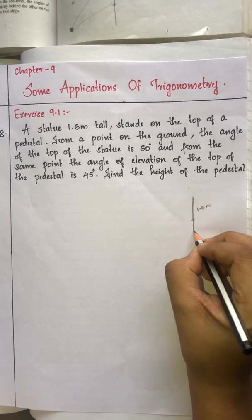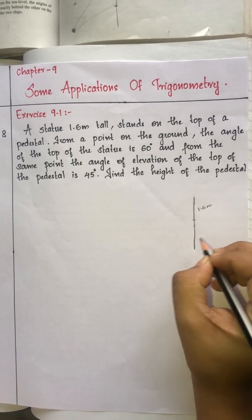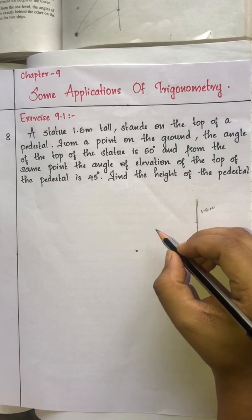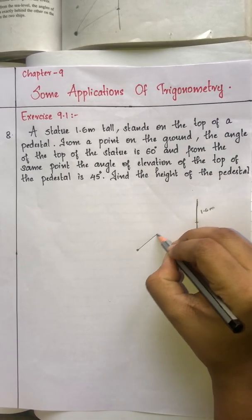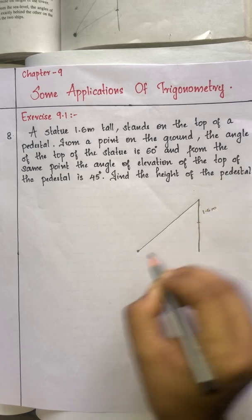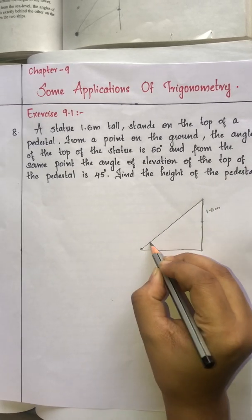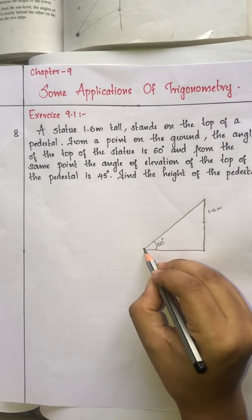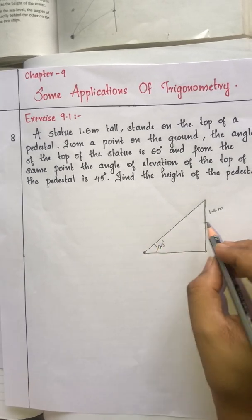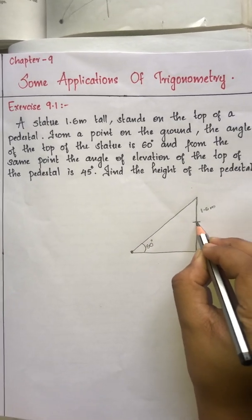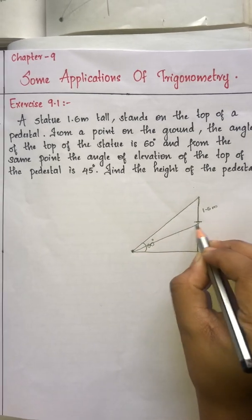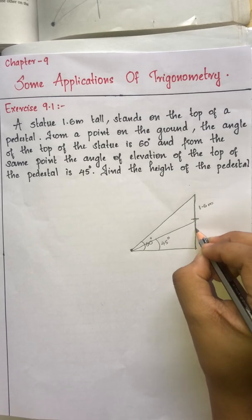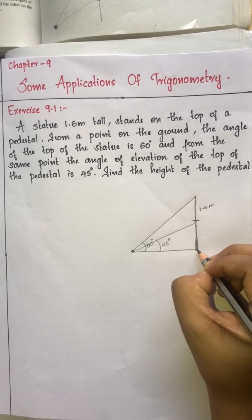So this is the statue, and this is the pedestal. The angle of elevation to the top of the statue is 60 degrees. From the same point, the angle of elevation to the top of the pedestal is 45 degrees. We need to find the height of the pedestal.